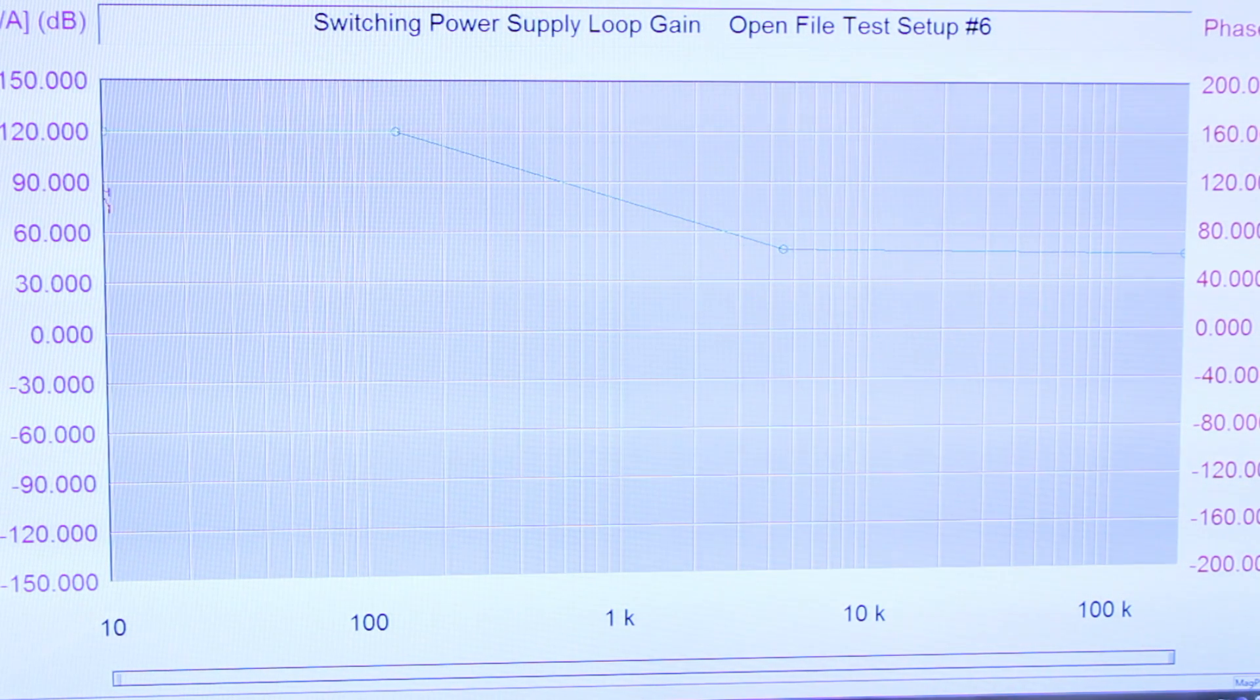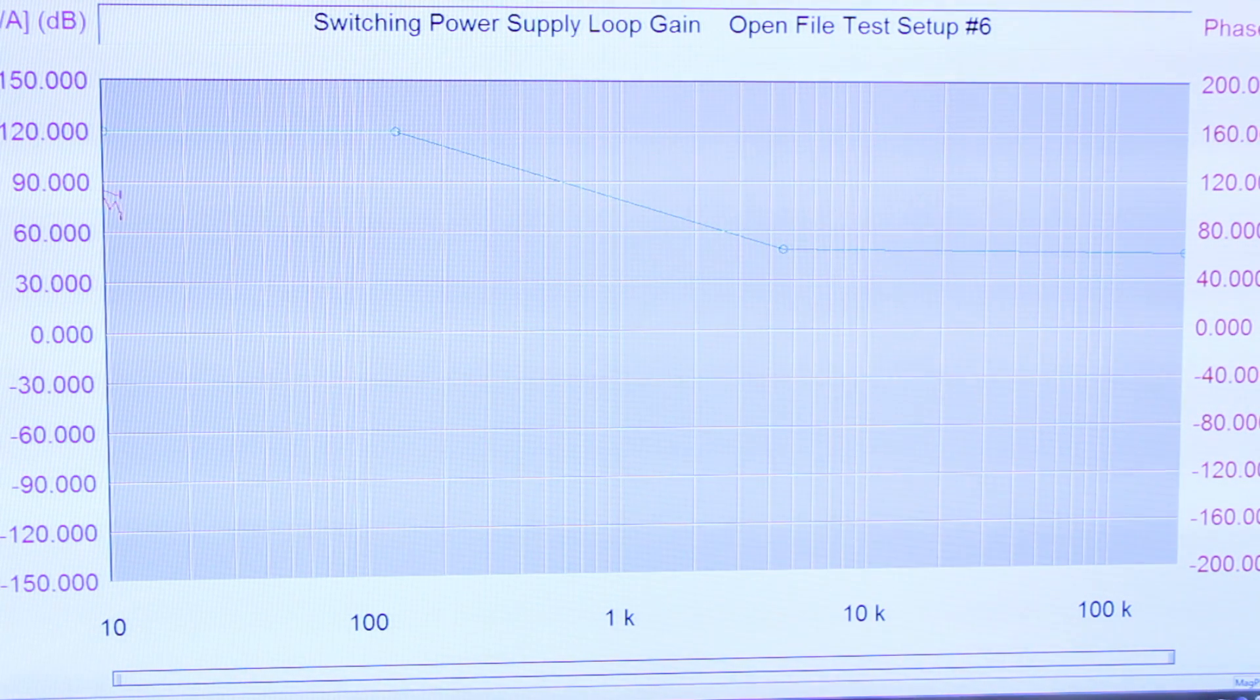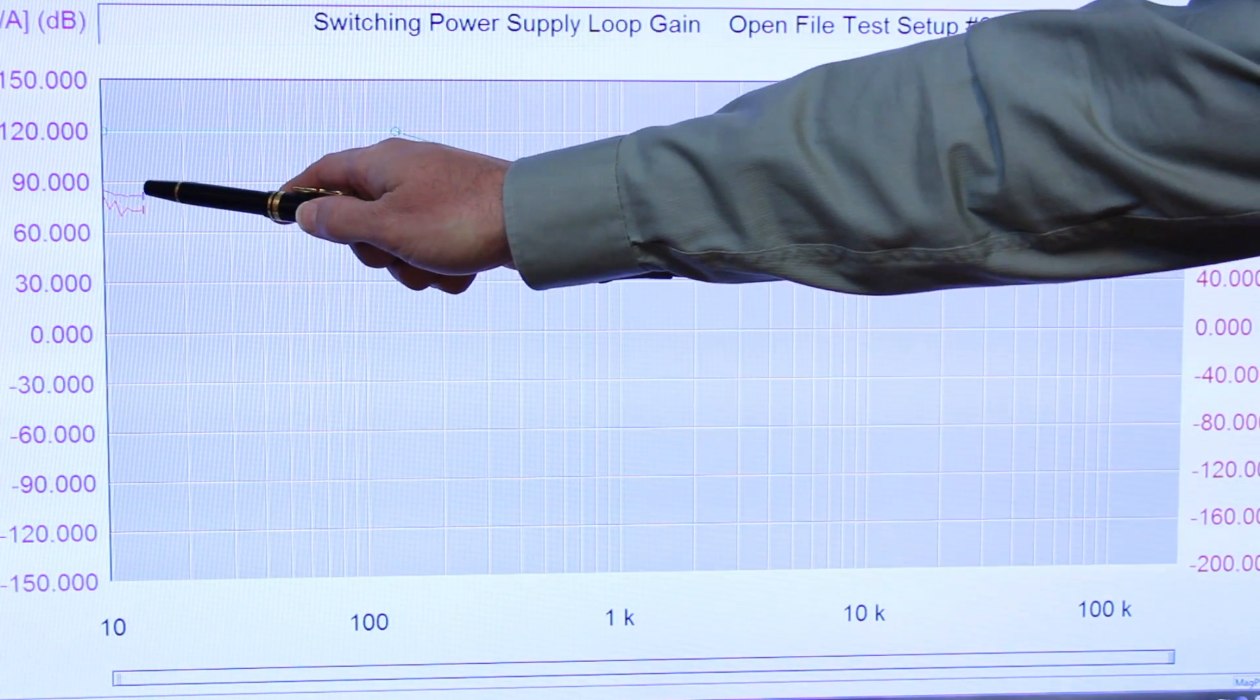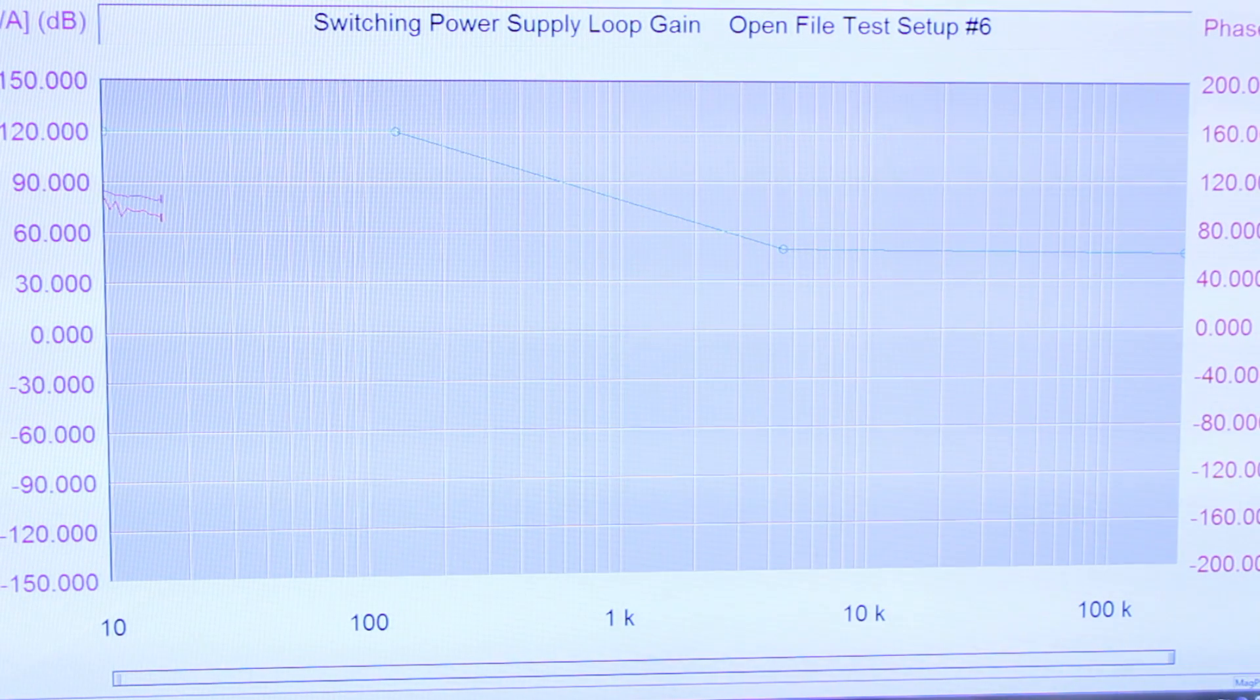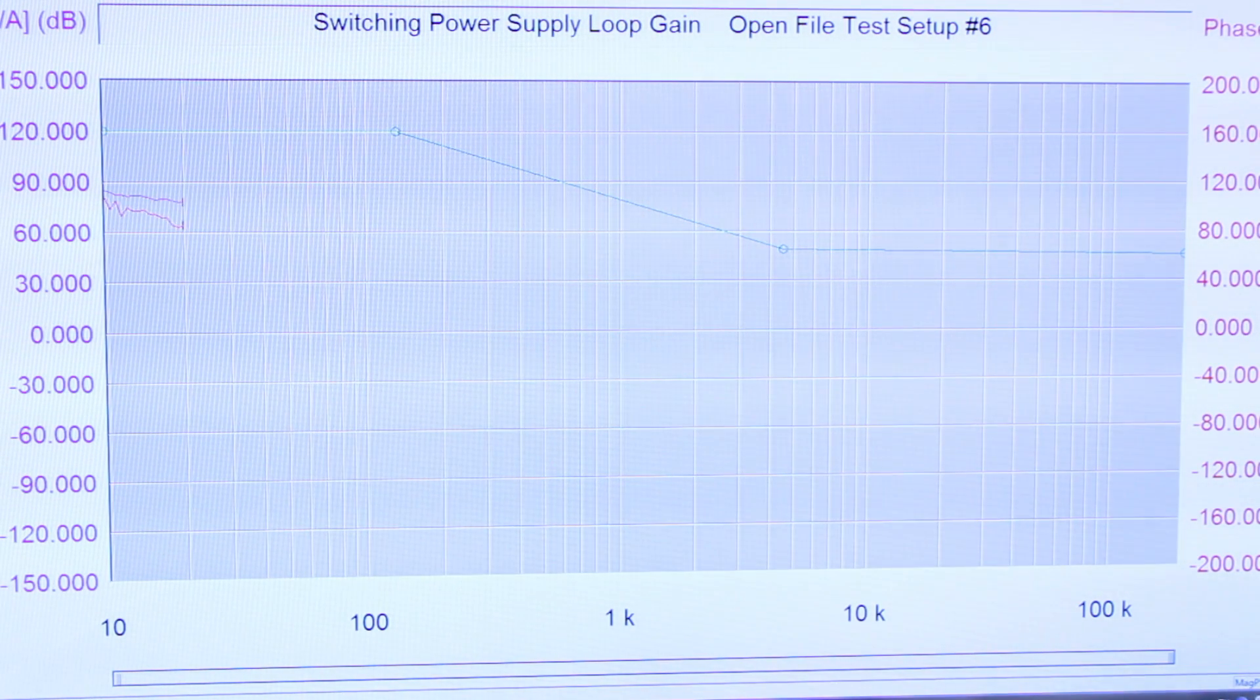And this is actually a current mode control converter, and you can see down at 10 Hertz the gain is quite high. It's above 80 dB. Tremendous amount of gain, and even though there's a lot of gain and a huge amount of noise in the system, you can see that the AP300 has no problems picking out the signal from the noise.